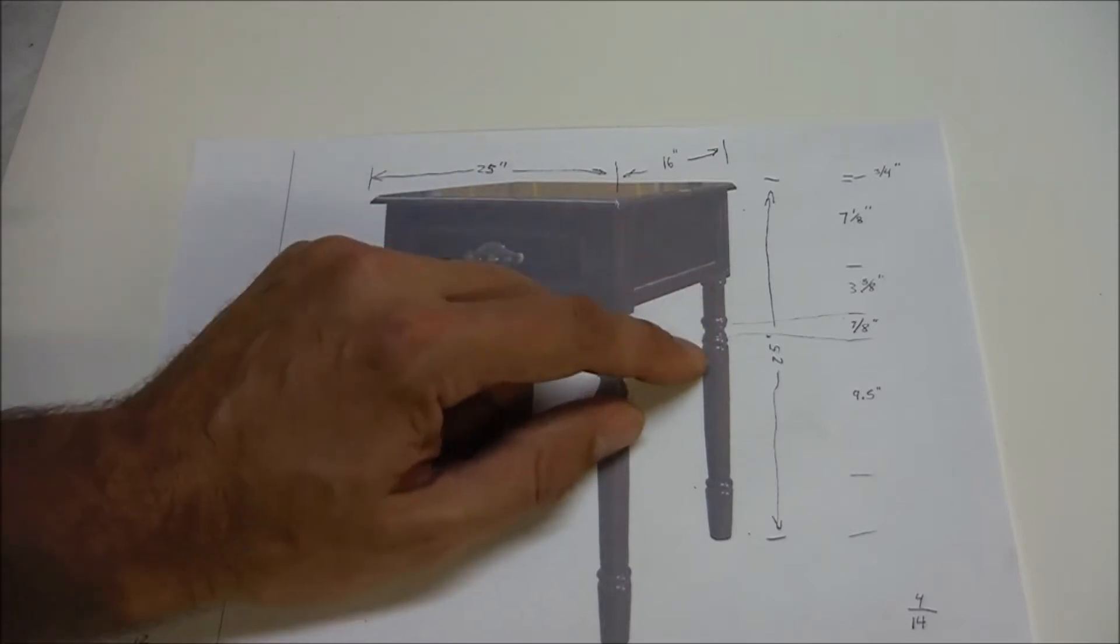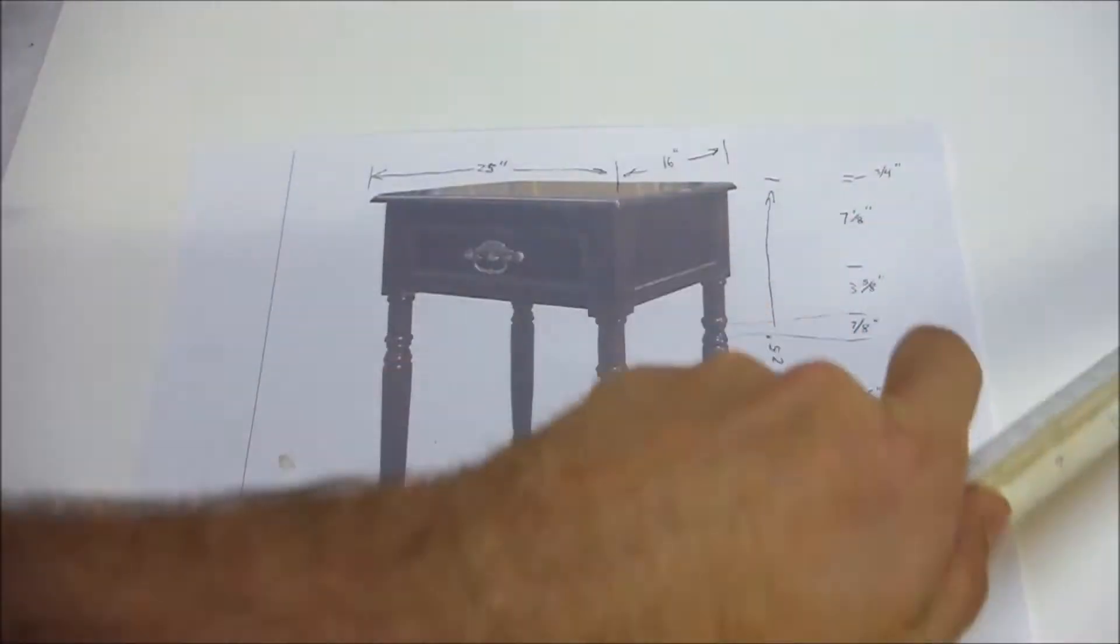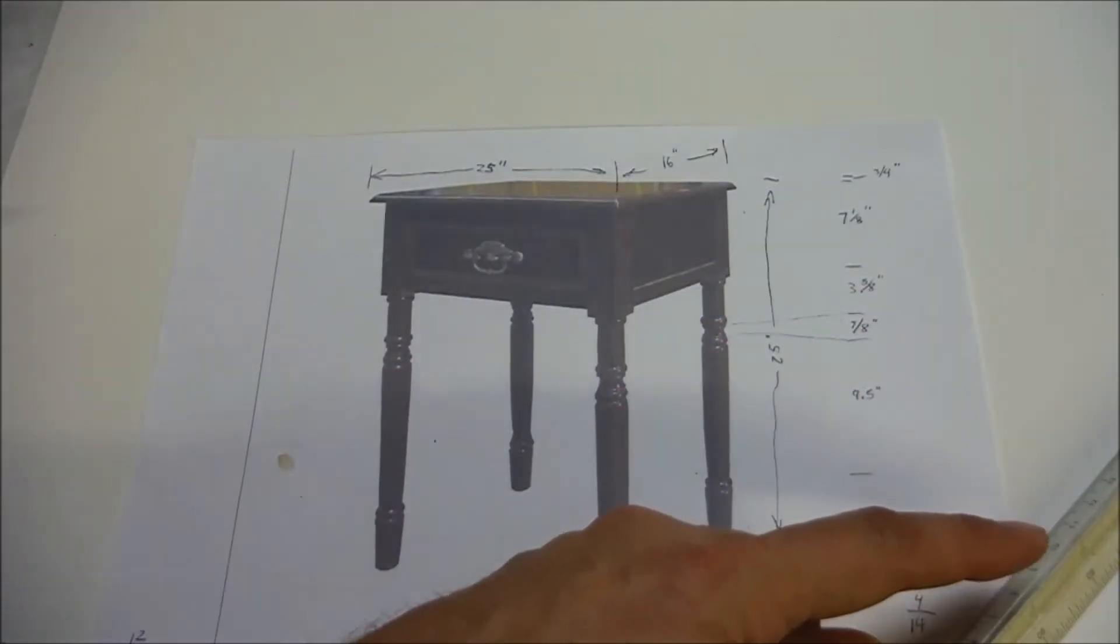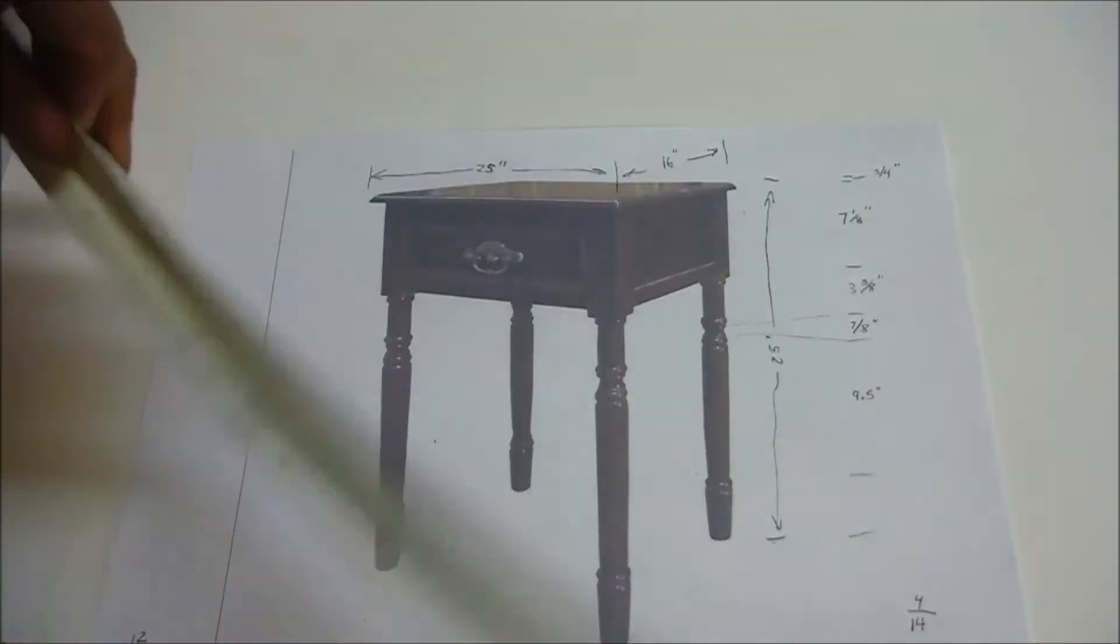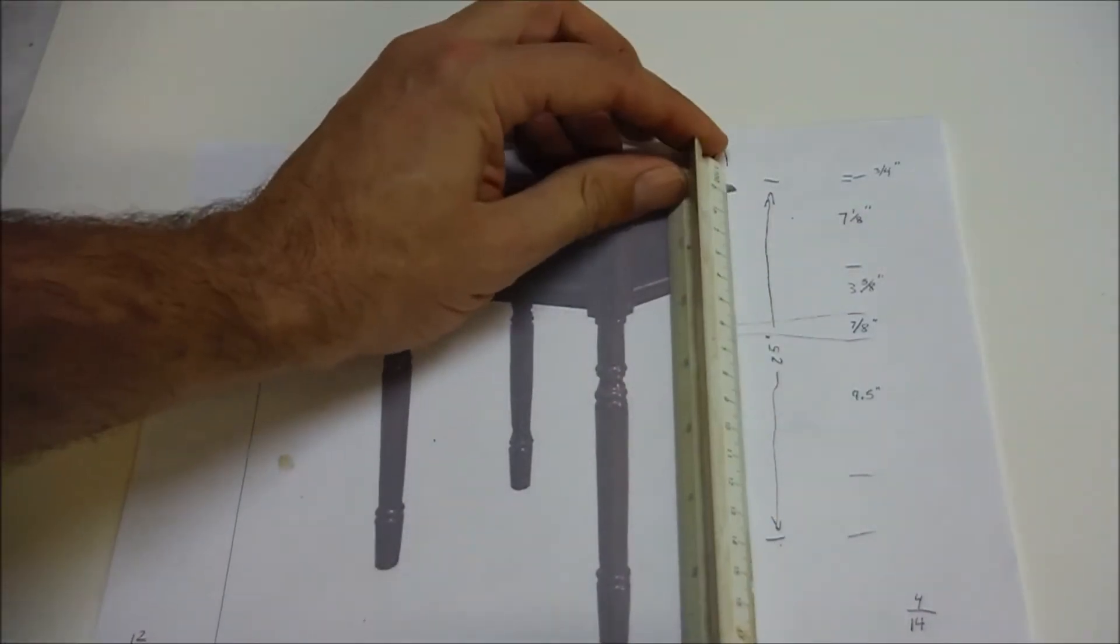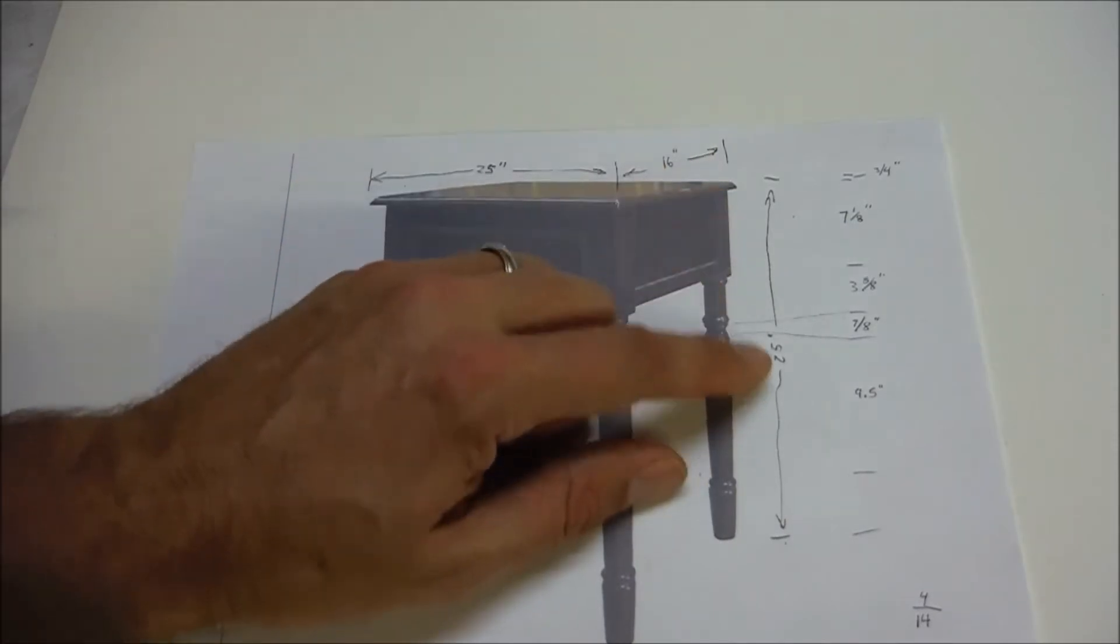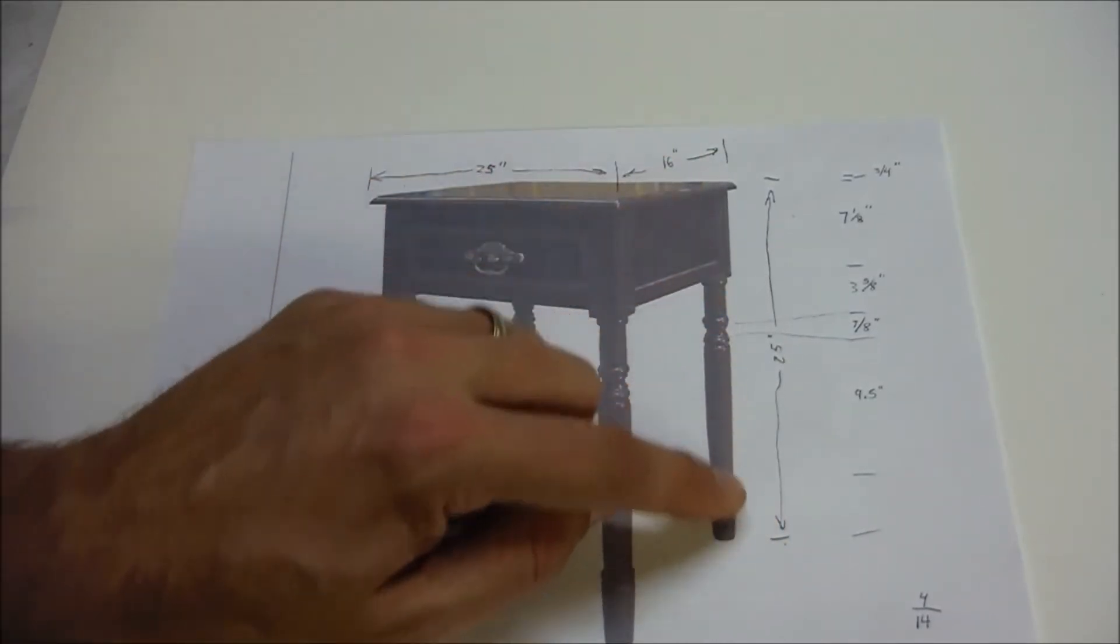The way I do it is I take the photograph and use a scale ruler. I got this engineer scale that uses centimeters. Centimeters are a lot easier because they go down to tenths of a centimeter. So you measure this distance, which is 14 centimeters, and that translates into 25 inches of height, and from that you can scale every section of it.